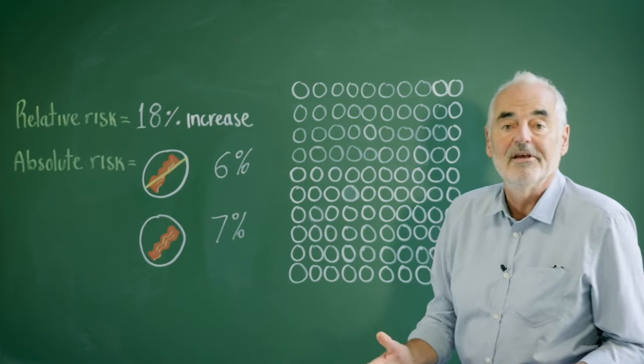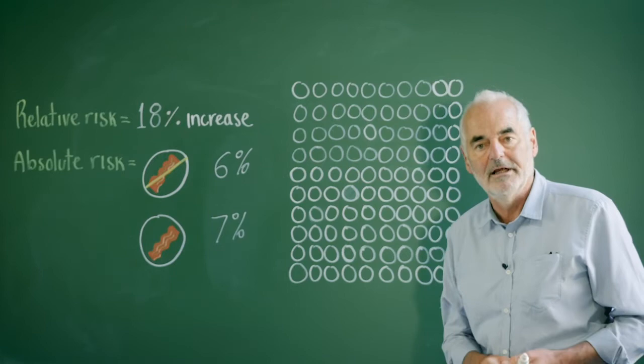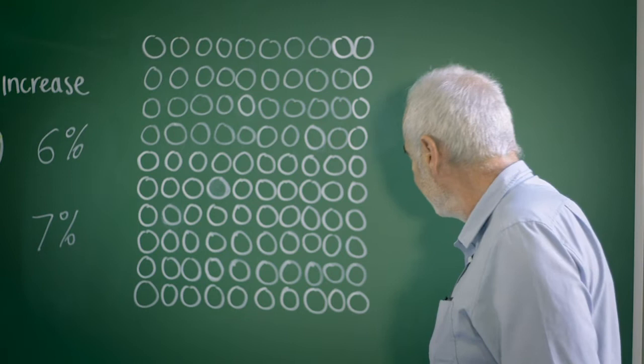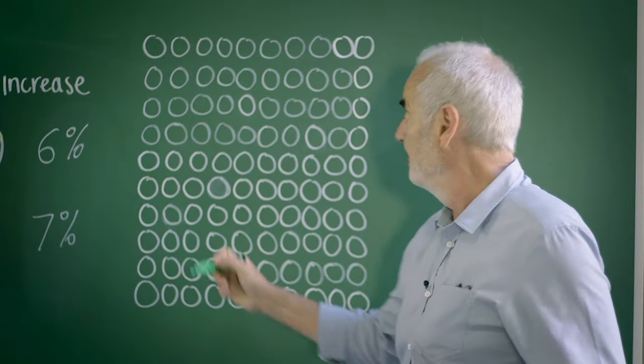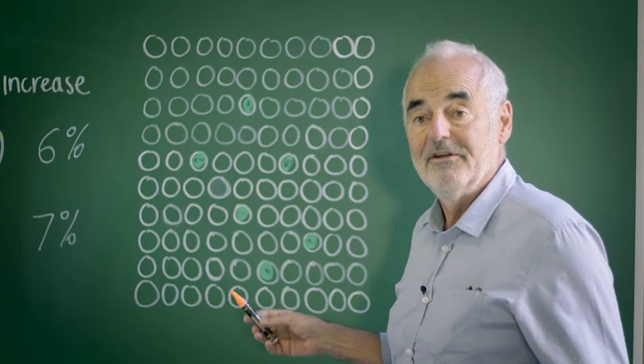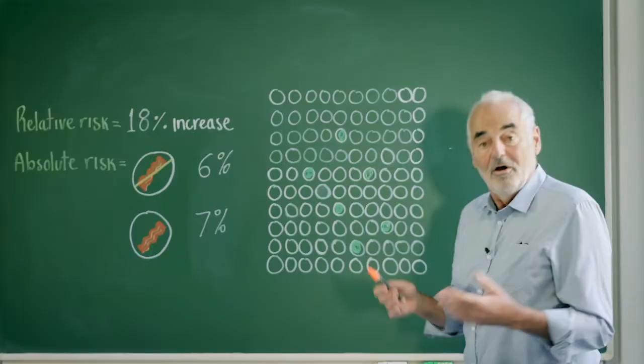Another very good way of communicating this increase in risk is to look at what it means for a hundred people, what's known as expected frequencies. We can say that out of a hundred people eating the normal amount of bacon we would expect six of them to get bowel cancer very sadly during their lifetime. But let's compare that with a hundred other people all of whom eat a bacon sandwich extra every day and we would expect then one extra case of bowel cancer. That's the 6% rising to 7%.